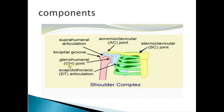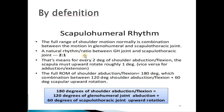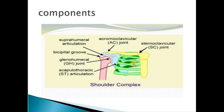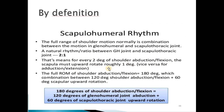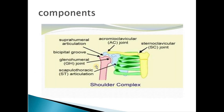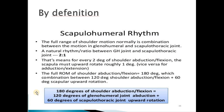The normal rhythm follows a 2:1 ratio. This means that for each two degrees of shoulder abduction or forward flexion, there is one degree of scapular upward rotation. So for every two degrees the shoulder joint moves, the scapula will upwardly rotate one degree.